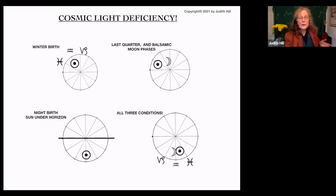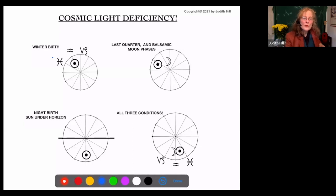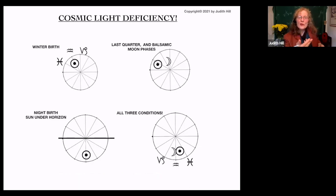If you're born in the last quarter of the moon, or especially the balsamic phase right before new moon, you will see the moon's going dark. This can add to a lack of cosmic light. The moonlight is very low even just at new moon and right after new moon.